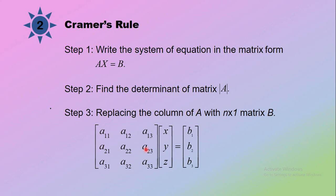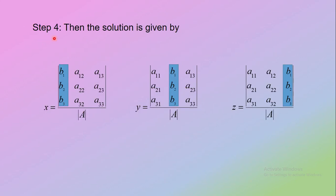Here is the system AX equals B. Step 4, the solution is given by: to find X, write the determinant obtained by replacing the first column of determinant A with the elements of matrix B, and divide by the determinant of A. To find Y, use the determinant obtained by replacing the second column of A with matrix B, divided by determinant A. For Z, replace the third column with elements of matrix B.